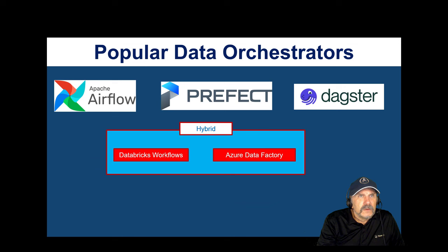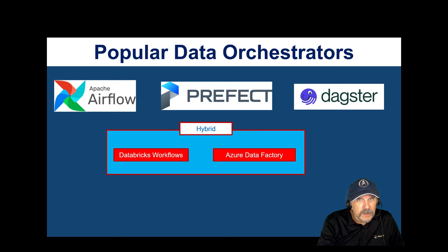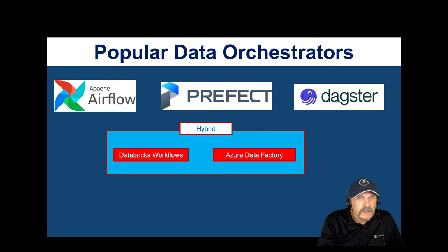Popular data orchestrators include Apache Airflow — though I'd classify it more as an orchestrator than a data orchestrator. I haven't looked at Prefect yet. I've done an extensive evaluation of DAGSTOR over the last six months and am extremely impressed — it supports all the key features, though streaming support may not be fully there yet. Hybrid tools like Databricks Workflows and Azure Data Factory also support a lot of data orchestration functionality, and they work really well together.